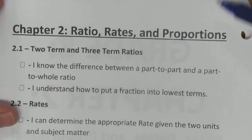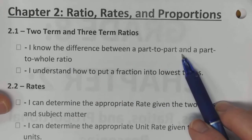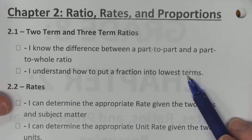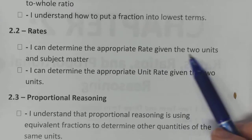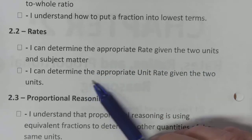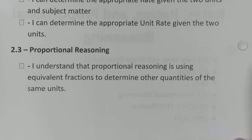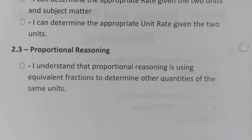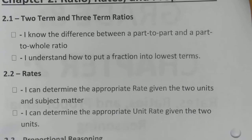As we go through the chapter, you want to make sure you're aware of these things that you're picking up on. Specifically for today, 2.1, you're going to want to know the difference between a part-to-part and a part-to-whole ratio. So that's some definition type stuff. And you also need to understand how to put a fraction into lowest terms. If you can do those things, hopefully you'll be in good shape for 2.1. For 2.2, you want to be able to determine the appropriate rate given the two units and subject matter. And you'll need to determine the appropriate unit rate given the two units. So nothing to worry about today, but just moving forward, that's what you'll need to keep in mind. And for 2.3, the final part of the chapter, you'll need to understand that proportional reasoning is using equivalent fractions to determine other quantities of the same units. So equivalent fractions came up here. We're putting fractions in the lowest terms. So working with fractions is pretty key in this particular chapter.